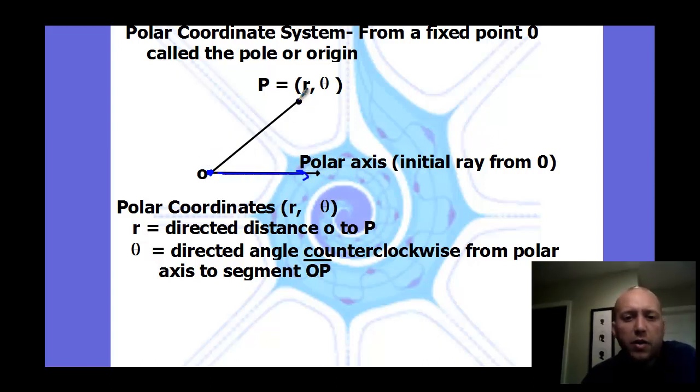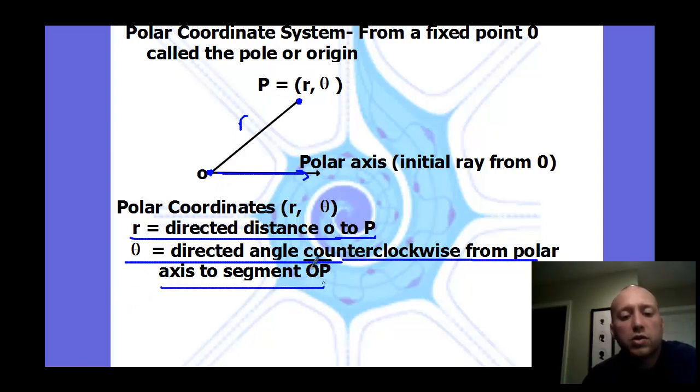We have some other point up here, which is r theta. Notice how it's not x, y. This point is written r theta, where r is the directed distance from O to point P. What is that length? And theta is the directed angle counterclockwise from the polar axis to the segment.